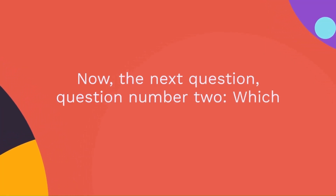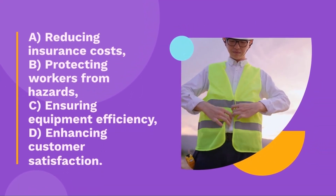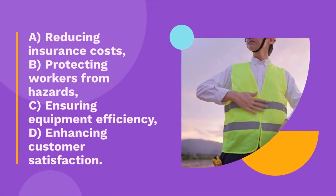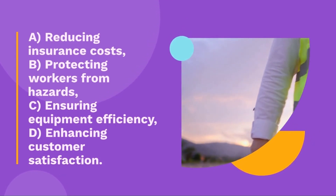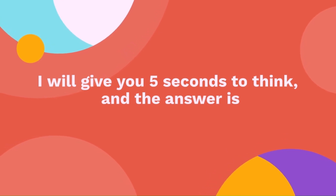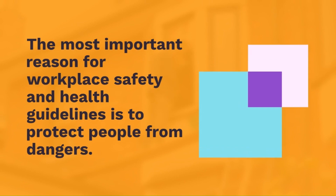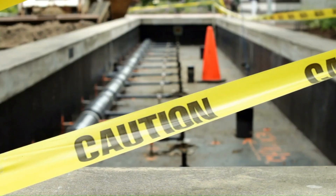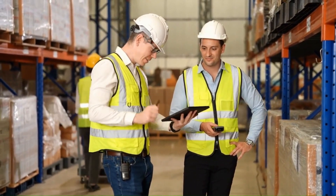Question 2: Which of the following is a critical reason for implementing WSH guidelines? Option A: reducing insurance cost. Option B: protecting workers from hazards. Option C: ensuring equipment efficiency. Option D: enhancing customer satisfaction. The answer is protecting workers from hazards. The most important reason for WSH guidelines is to protect people from dangers — like putting up a fence around a dangerous area. Think of WSH as a protective shield that keeps you safe from potential dangers at work.